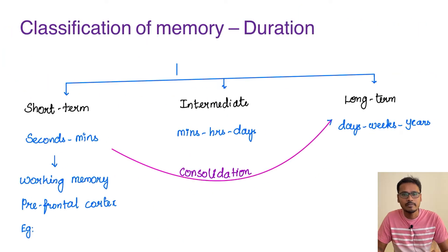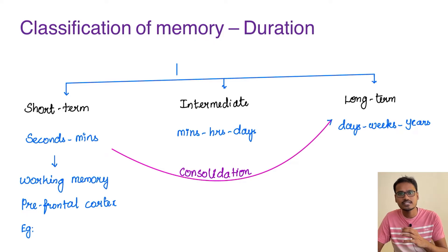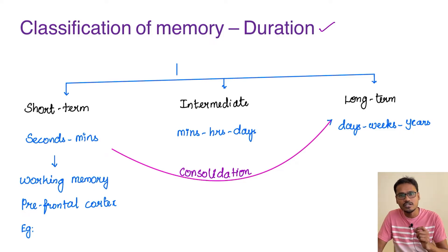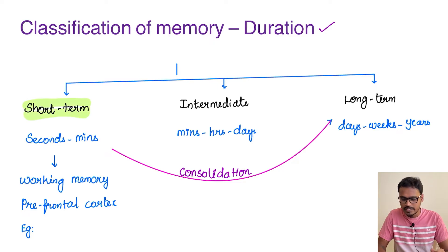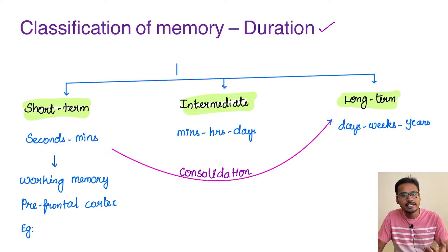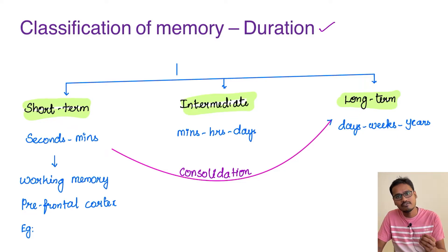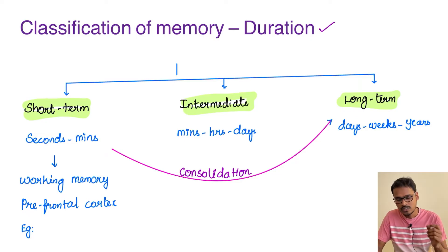Now coming to the classification of memory. Memory can be classified into various types based on duration as well as different forms. Starting with classification based on duration: memory can be classified into short-term memory, intermediate memory, and long-term memory. Short-term memory lasts for a very few seconds to minutes, intermediate memory lasts for minutes, hours, or days, whereas long-term memory can last for days, weeks, years, or even lifelong.